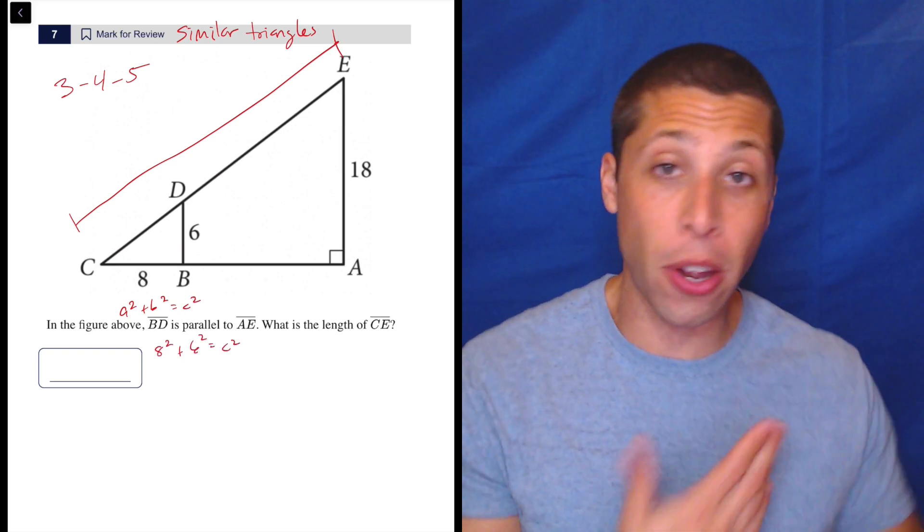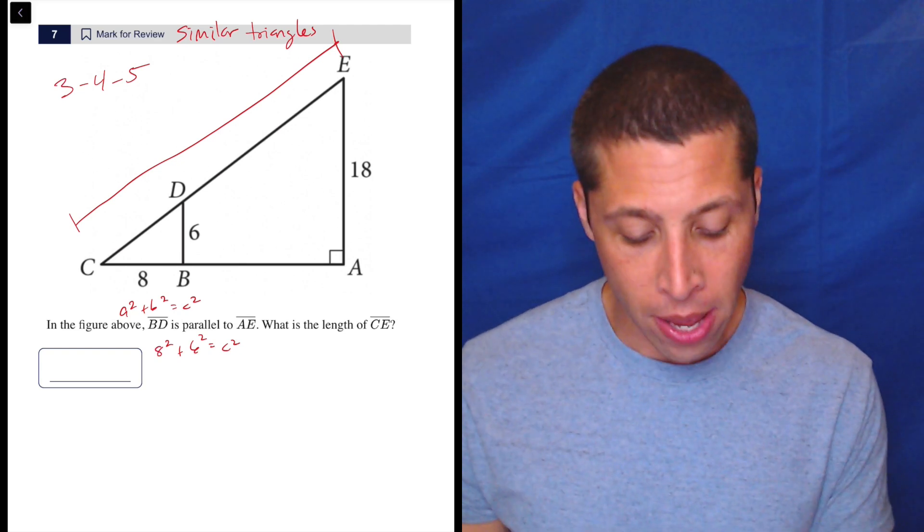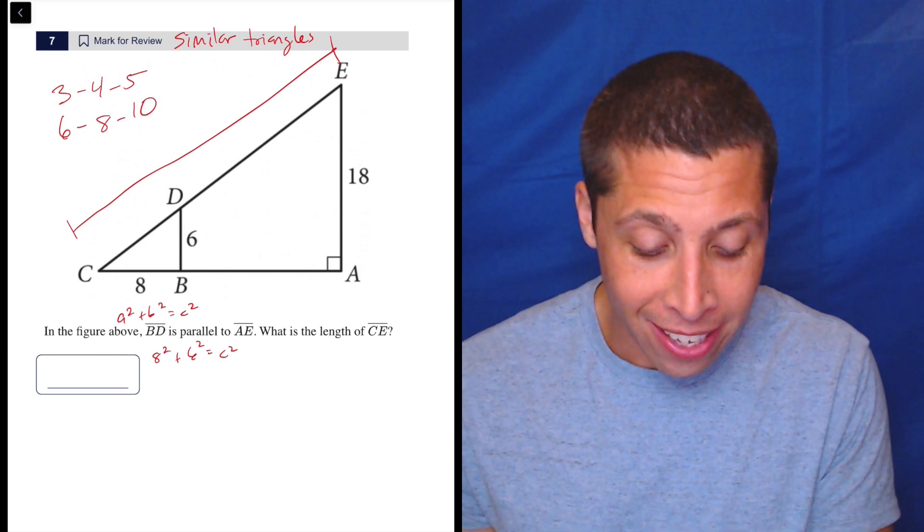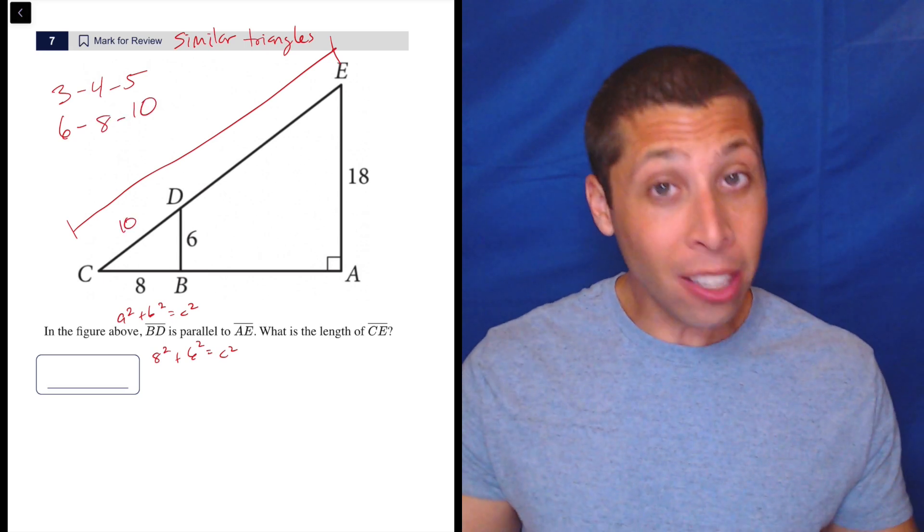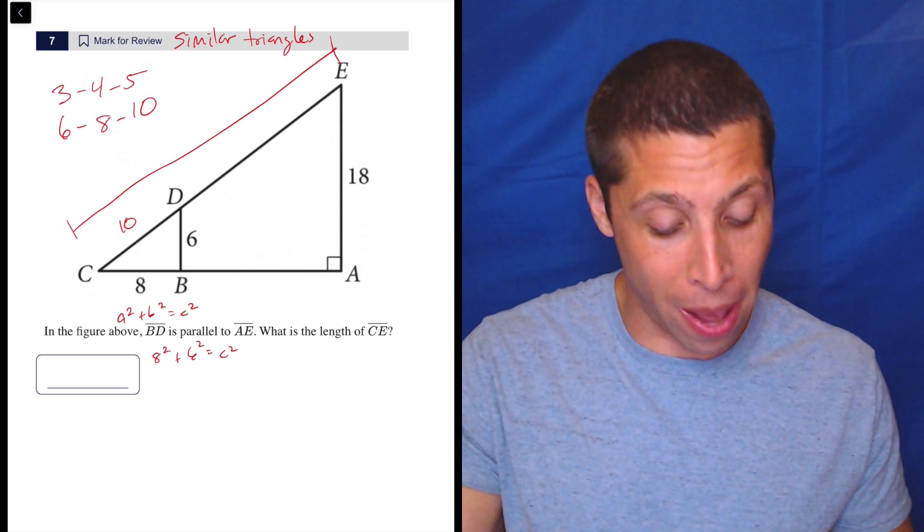C squared. And you'll solve that whole thing and you will get the right answer. But if you recognize that this is that 3, 4, 5 and that they've just multiplied it by 2 so that it's 6, 8, 10, in literally three seconds we've got that hypotenuse there.